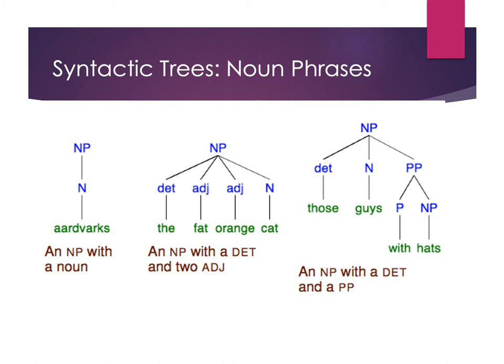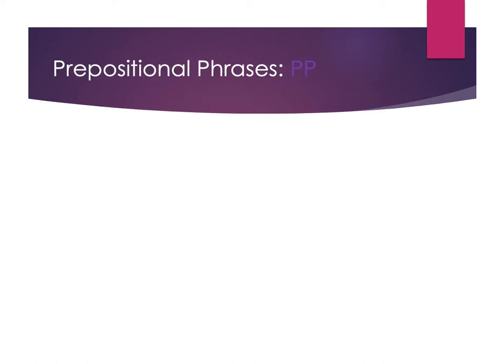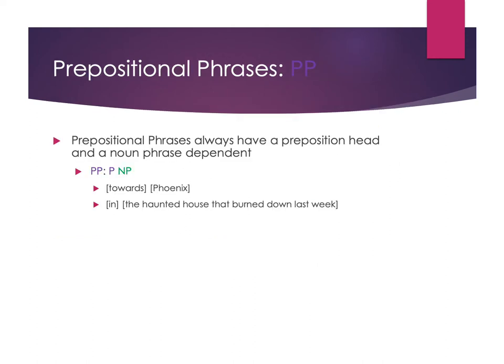Prepositional phrases will always have a preposition head and will always have a noun phrase dependent. There are no optional elements in a prepositional phrase — in English, we always have preposition and noun phrase, no matter what. So I can have a simple one like 'towards Phoenix,' where the preposition 'towards' has a noun phrase consisting of just a single noun, or a much more complex noun phrase like 'in the haunted house that burned down last week,' which I would then need to break out into multiple levels.